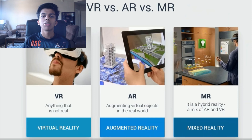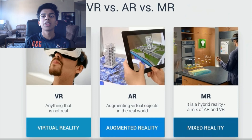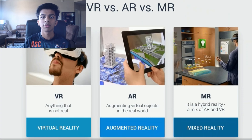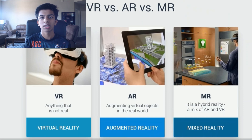MR — mixed reality — takes AR to the next level. Instead of just being a layer on top of the world, MR renders digitally rendered objects into a real environment, such as holograms. And that is HoloLens.